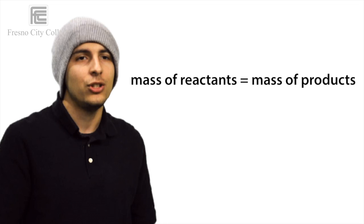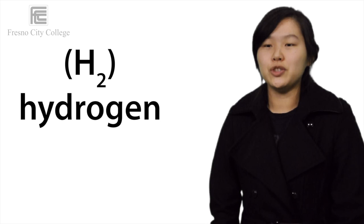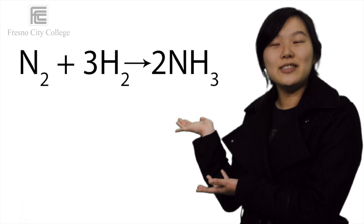As an example, in a reaction that forms ammonia, NH3, exactly one molecule of nitrogen, N2, reacts with three molecules of hydrogen, H2, which produces two molecules of NH3. This is written in a chemical formula as: N2 + 3H2 → 2NH3.